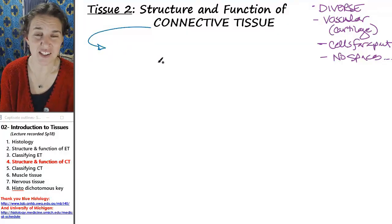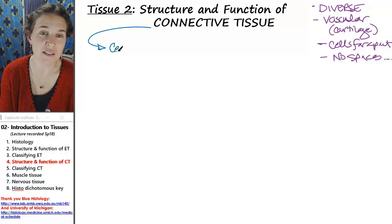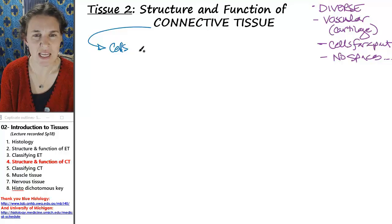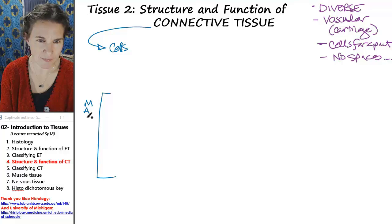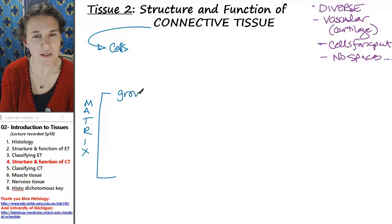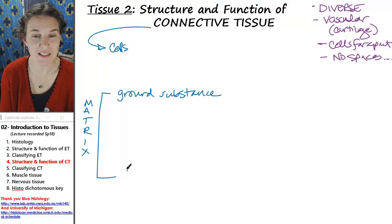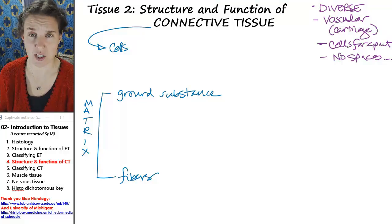They do have a definition. Connective tissues are cells embedded in a matrix. Cells in a matrix of ground substance and fibers, but of course that is what a connective tissue is.